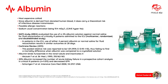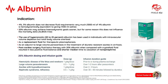Here you can see several studies published on the topic of albumin in ICU. 4% and 5% albumin don't decrease fluid requirements very much. In contrast, 20% albumin may achieve hemodynamic goals sooner, but for some reason this doesn't influence the mortality data. Hyper-oncotic albumin has been used in individuals with intravascular volume depletion but total body volume overload, as an adjunct to large volume paracentesis, or as a post-cardiac surgery fluid.